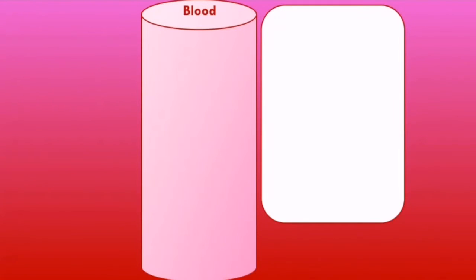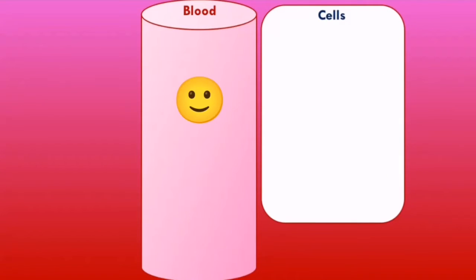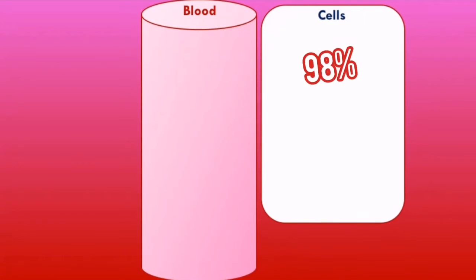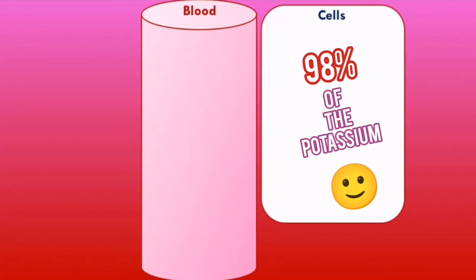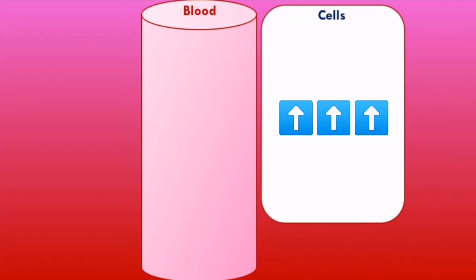Here we have the blood and here we have the cells of our body. Anything inside the cells is in the intracellular compartment, and everything outside the cells is called the extracellular compartment. About 98% of the potassium in our body is in the intracellular compartment. It is very important to maintain potassium levels at this high concentration inside cells, because this helps to maintain a normal resting membrane potential.